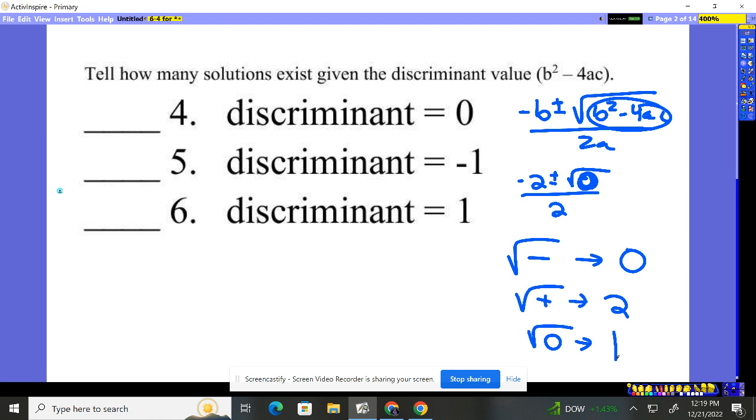So if our discriminant value is zero, like right here, the answer is there's one solution. If the discriminant value is negative, that means when it's negative, we couldn't do it. There's no solutions. And then finally, if the discriminant value is positive, there's two solutions.